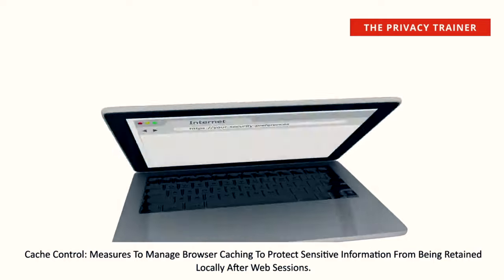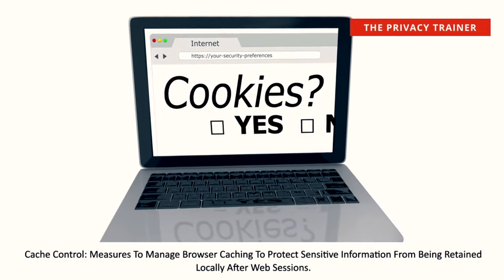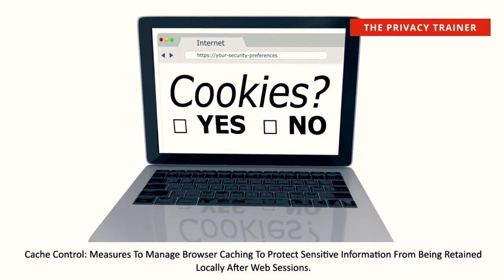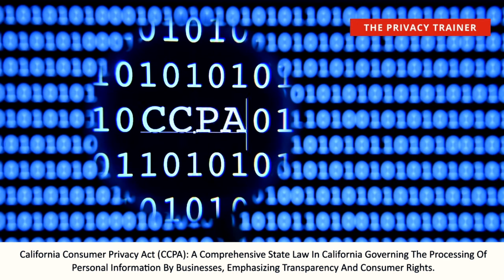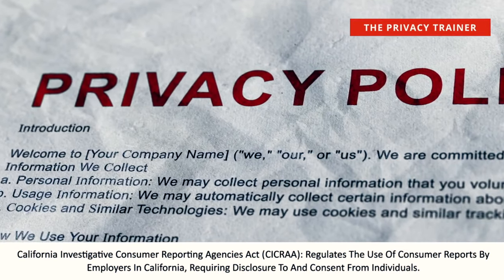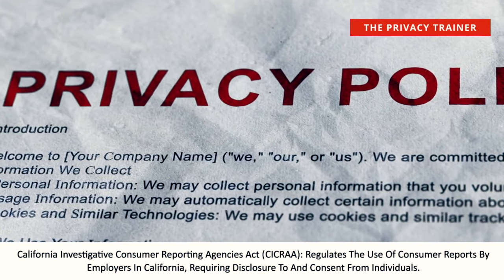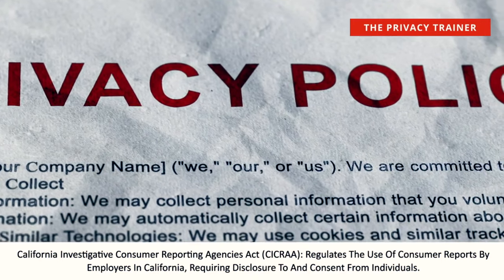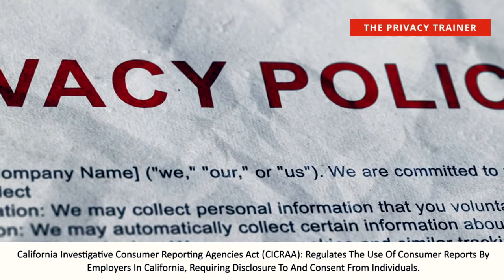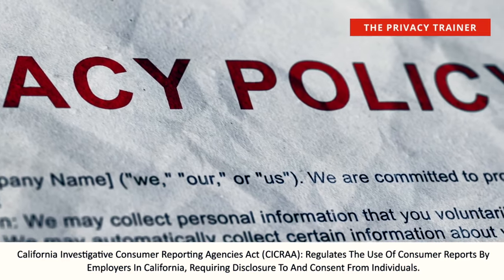Cache Control. Measures to manage browser caching to protect sensitive information from being retained locally after web sessions. California Consumer Privacy Act, CCPA. A comprehensive state law in California governing the processing of personal information by businesses, emphasizing transparency and consumer rights. California Investigative Consumer Reporting Agencies Act, CICRAA. Regulates the use of consumer reports by employers in California, requiring disclosure to and consent from individuals.